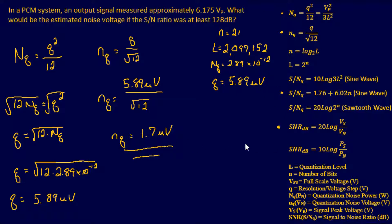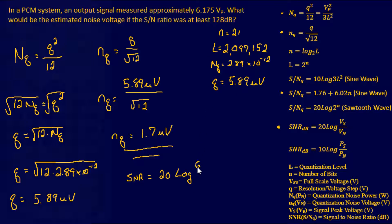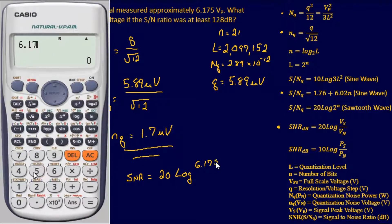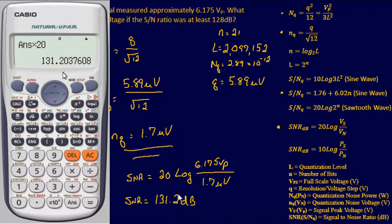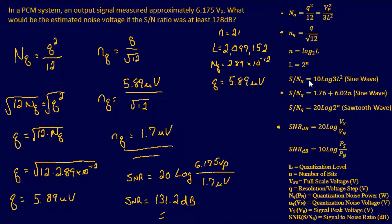We can do a quick sanity check using: signal-to-noise ratio equals 20 log of signal voltage over noise voltage. Our signal voltage is 6.175 volts and our noise voltage is 1.7 microvolts. Plugging and chugging gives us 131.2 decibels — that confirms our answer. You can also use the levels-based equation and it will give a similar result.